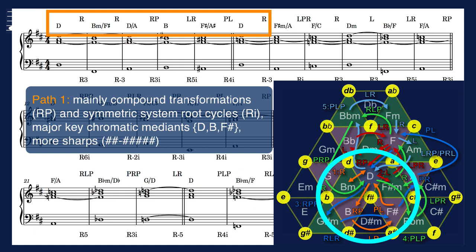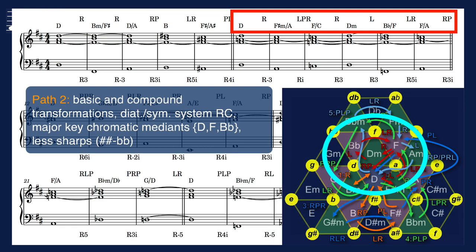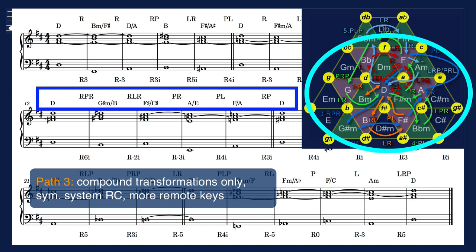In the lower zone of the Tonnetz diagram this means more sharps. In the second section there is more balance between basic and compound transformations, and thus between diatonic and symmetric system root movement. We are moving just above the D major in the Tonnetz diagram, into triads with less sharps or equivalently more flats. In path number 3 you'll see compound transformations only, root movement in the symmetric system and moving through more remote triads, as the envelope in the Tonnetz diagram shows.